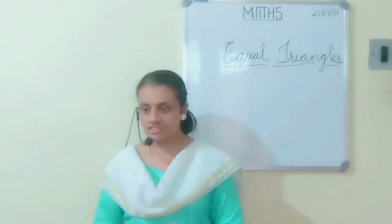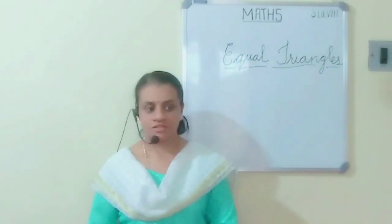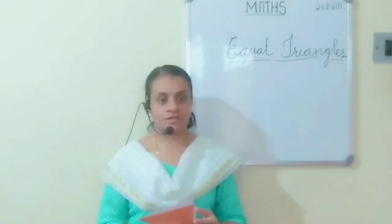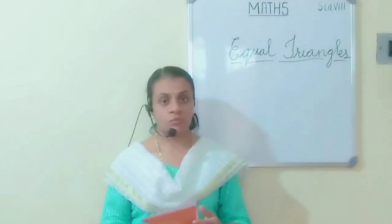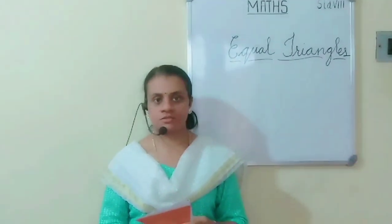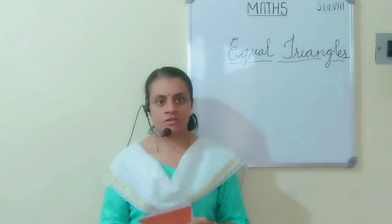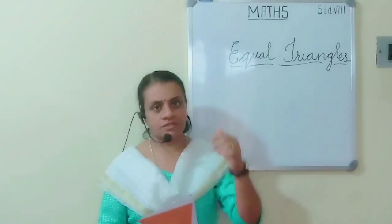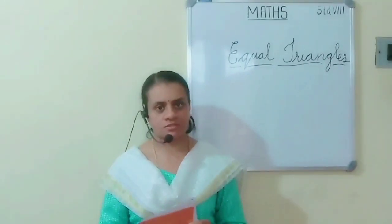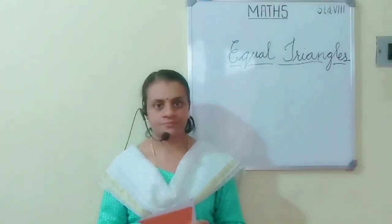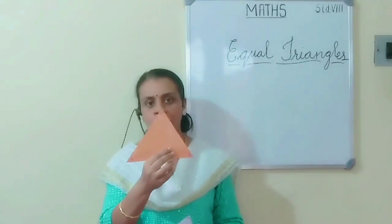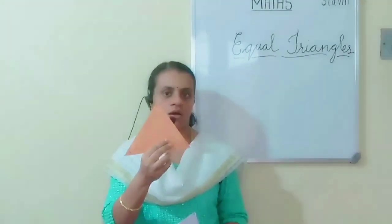Now draw another triangle with the same measurements as ABC, and name it PQR.